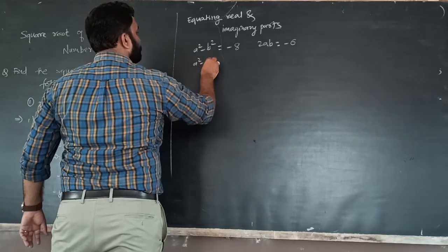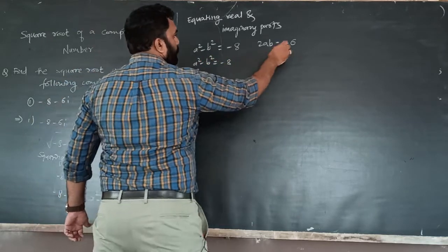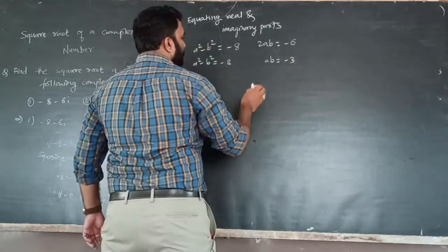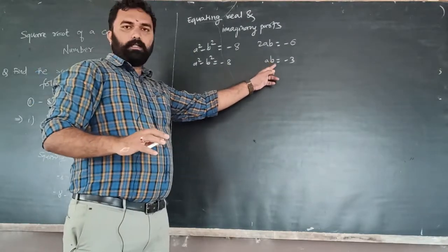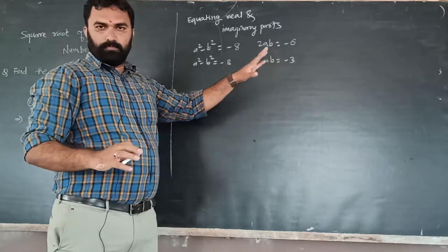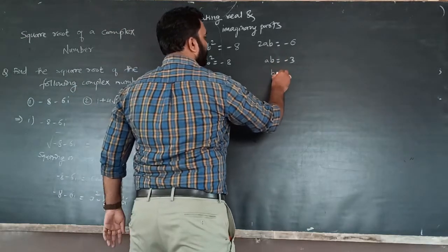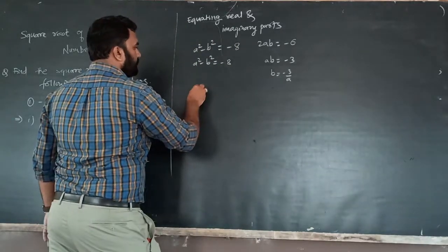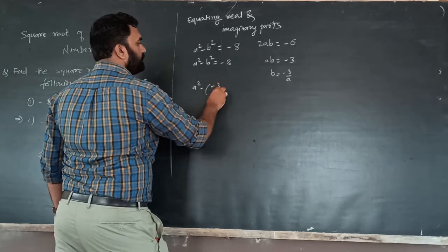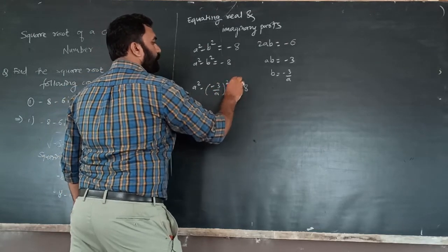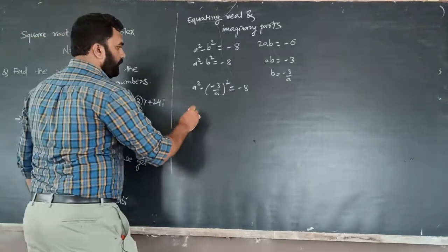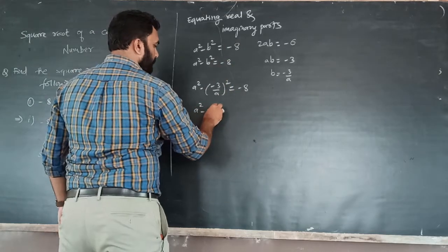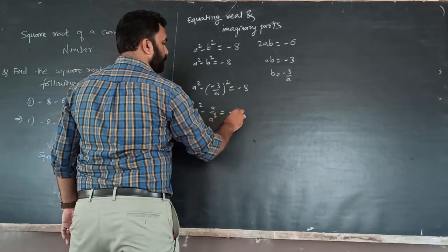So a squared minus b squared equals minus 8, and from 2ab equals minus 6 we get b equals minus 3 over a. Substituting: a squared minus (minus 3 over a) squared equals minus 8.